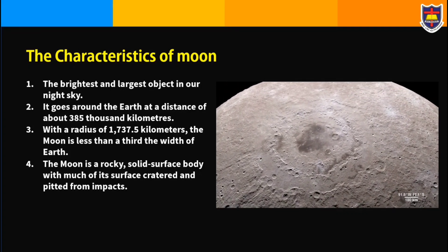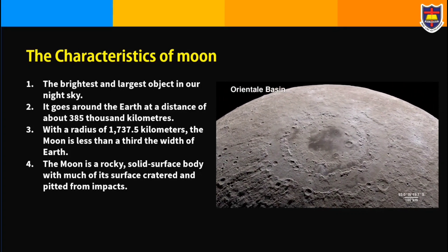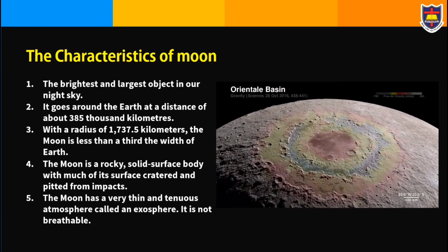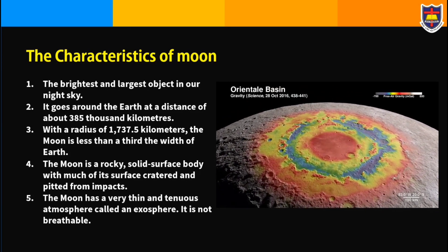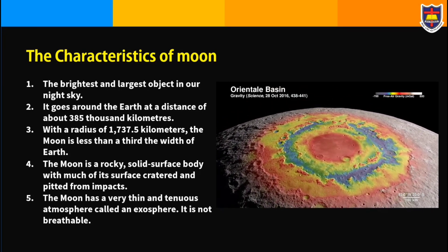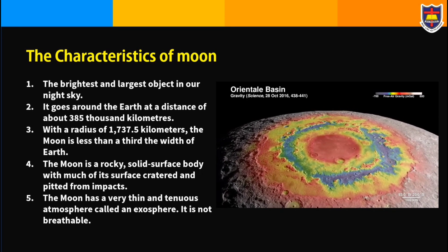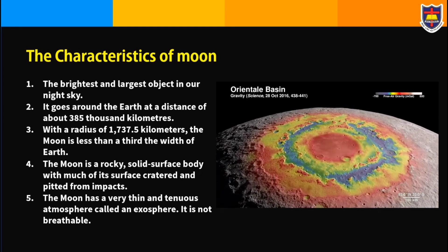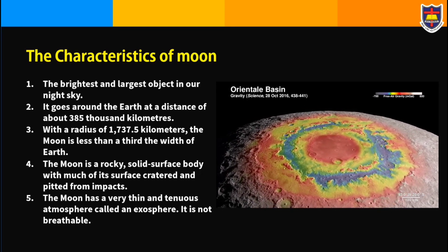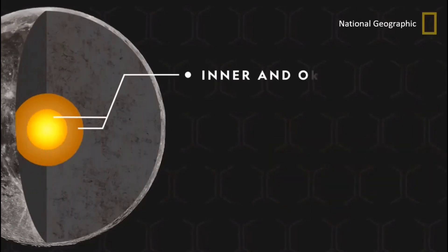The moon is a rocky solid surface body, with much of its surface cratered and pitted from impacts. The moon has a very thin and tenuous atmosphere called an exosphere, which is not breathable.